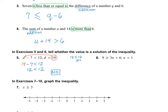Number 6: 9 ≥ 3n + 6, and they want n = 1. Substitute 1 in for n: 9 ≥ 3(1) + 6. Simplify: 3 + 6 = 9, so 9 ≥ 9. That is true, so yes, n = 1 is a solution to that inequality.